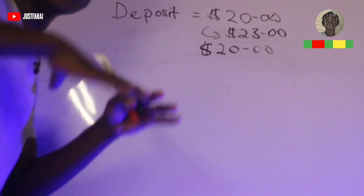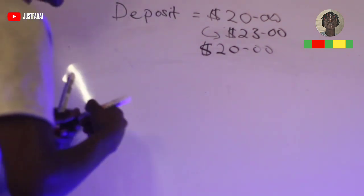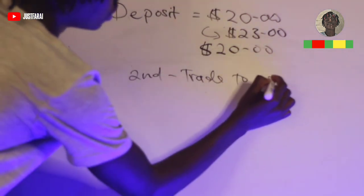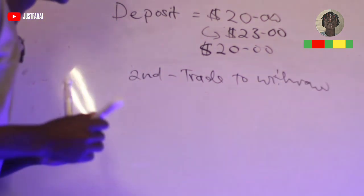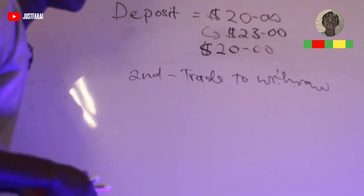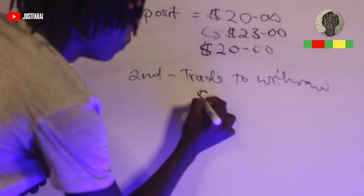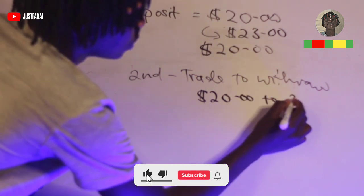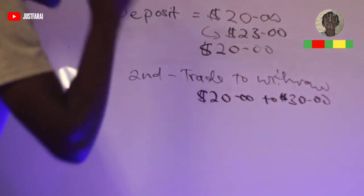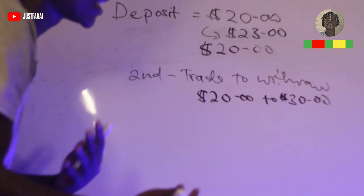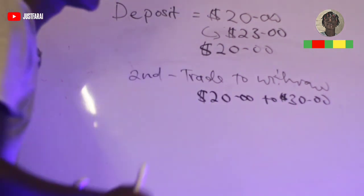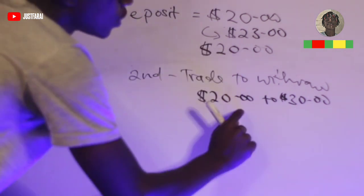The second module is what I call 'trade to withdraw.' Now that your account is back to $20, you target moving it from $20 to $30. Moving from $20 to $30 is one of the easiest things to do with a small account. So you trade from $20 up to $30.